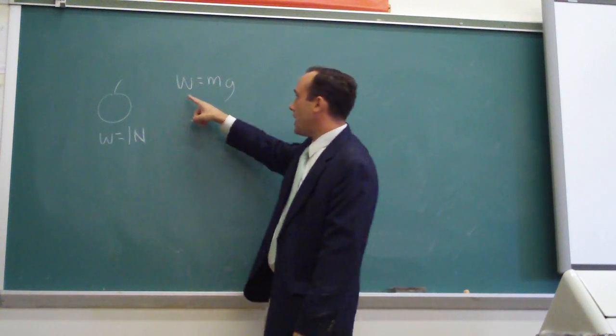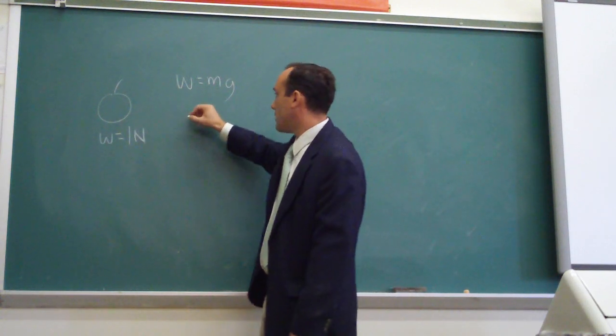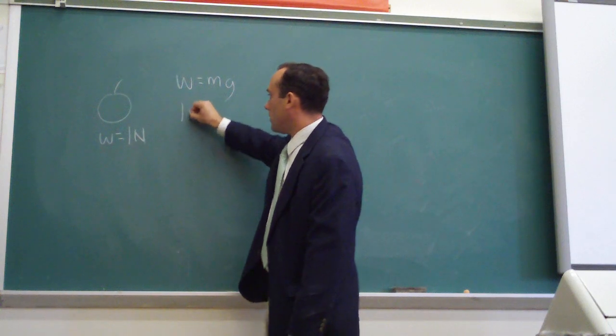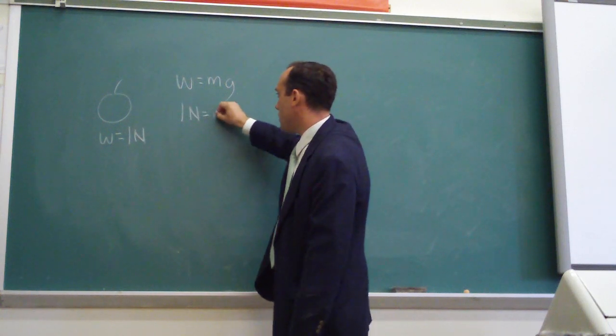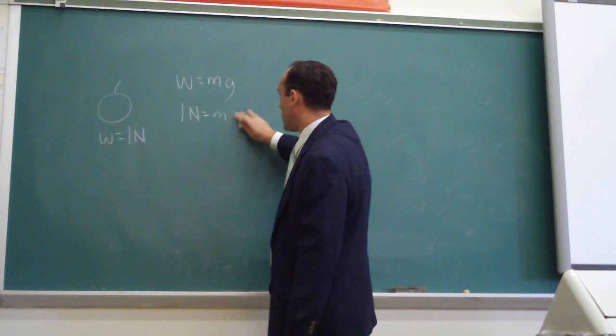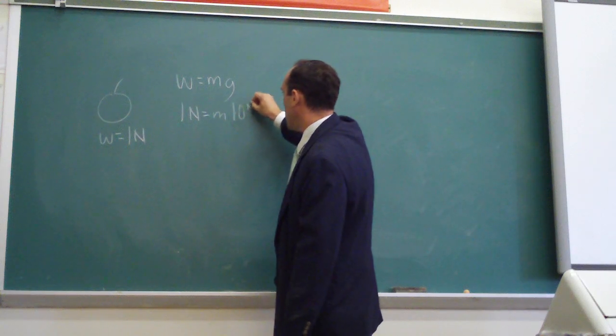So if we have this equation, we start plugging the numbers in. We can say that one newton is equal to the mass times the gravitational constant, which is ten newtons per kilogram.